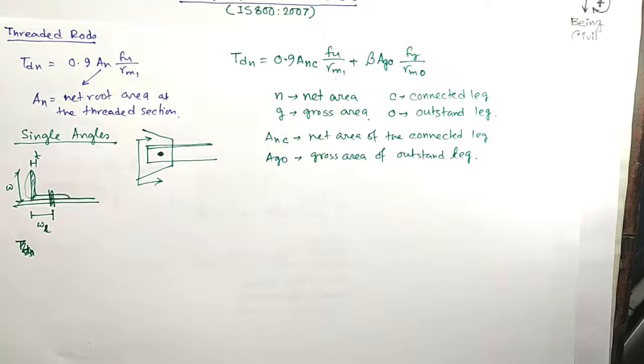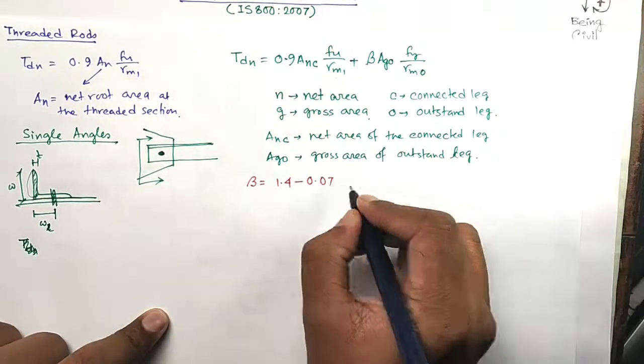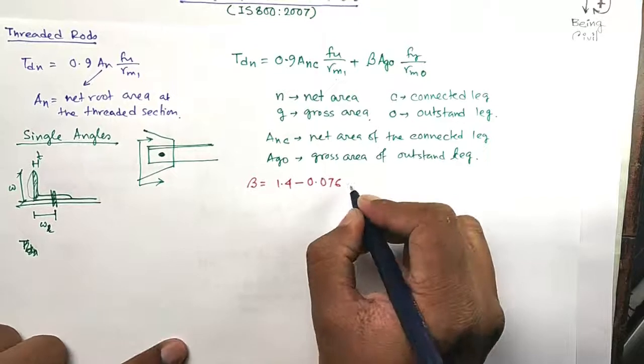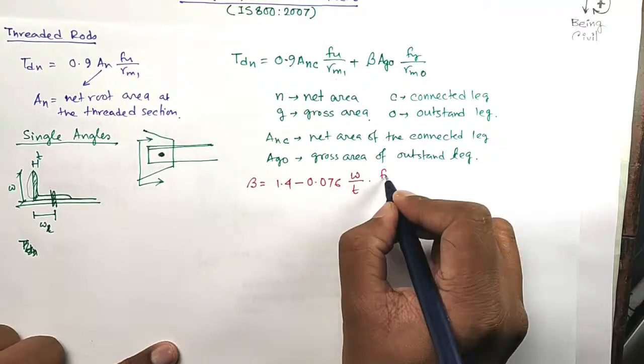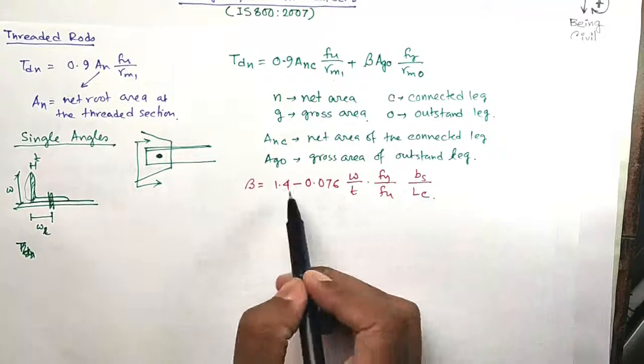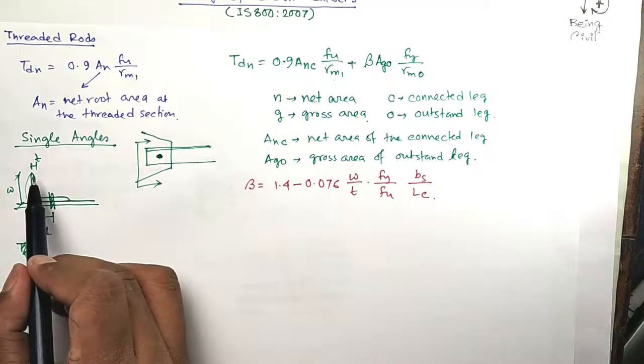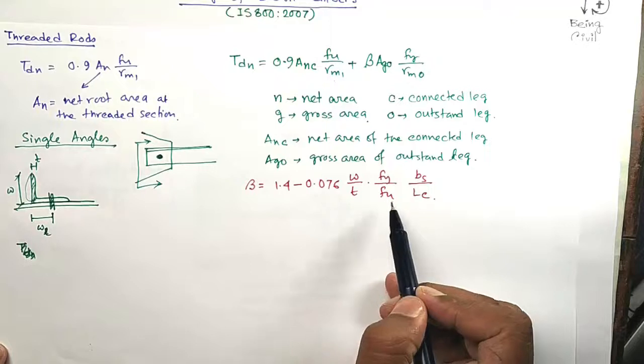This beta can be calculated as β = 1.4 - 0.076×(W/T)×(FY/FU)×(Bs/LC). W is the angle leg length, T is the thickness of the angle, FY and FU you know.